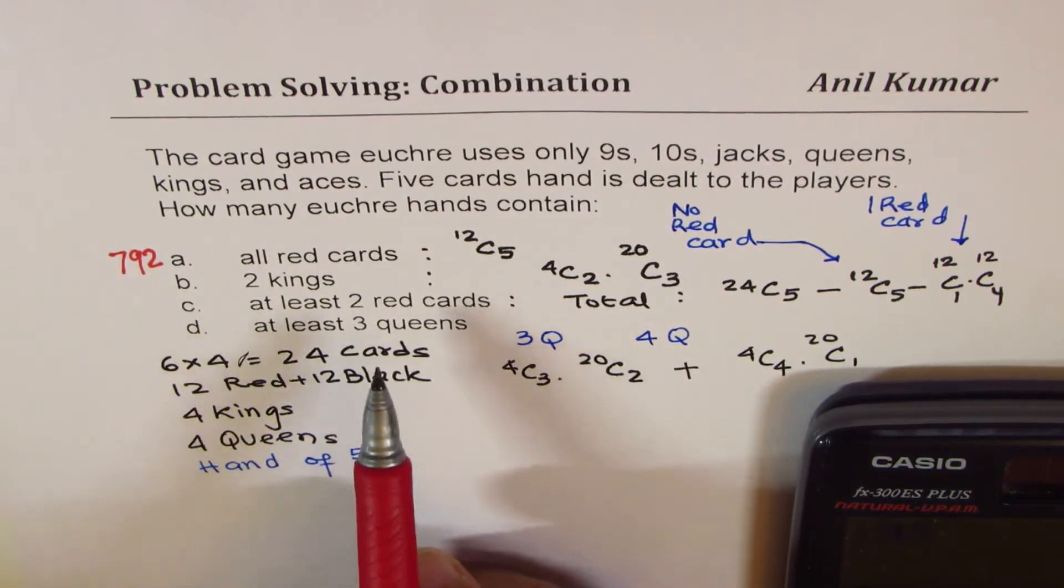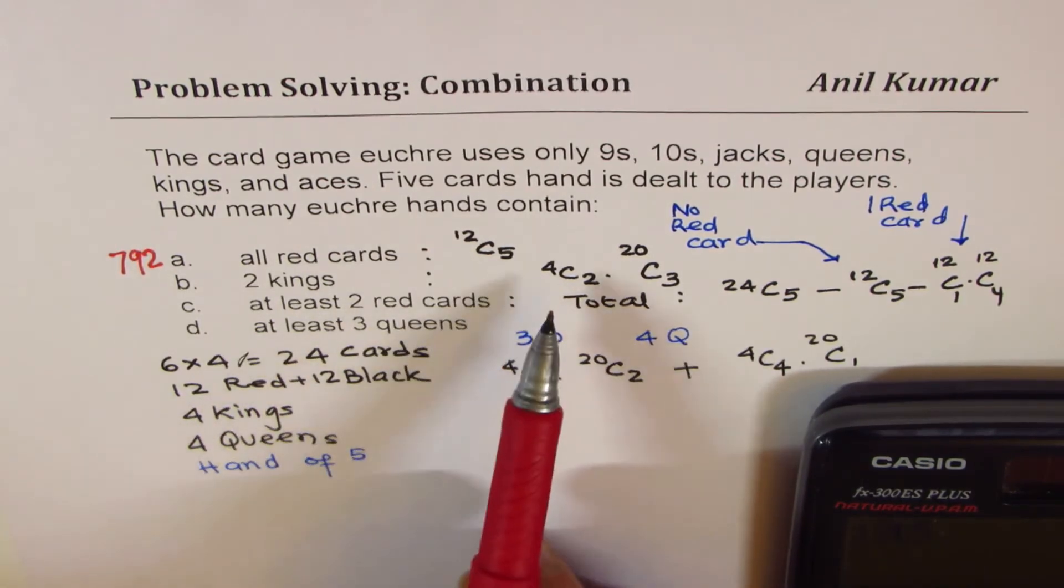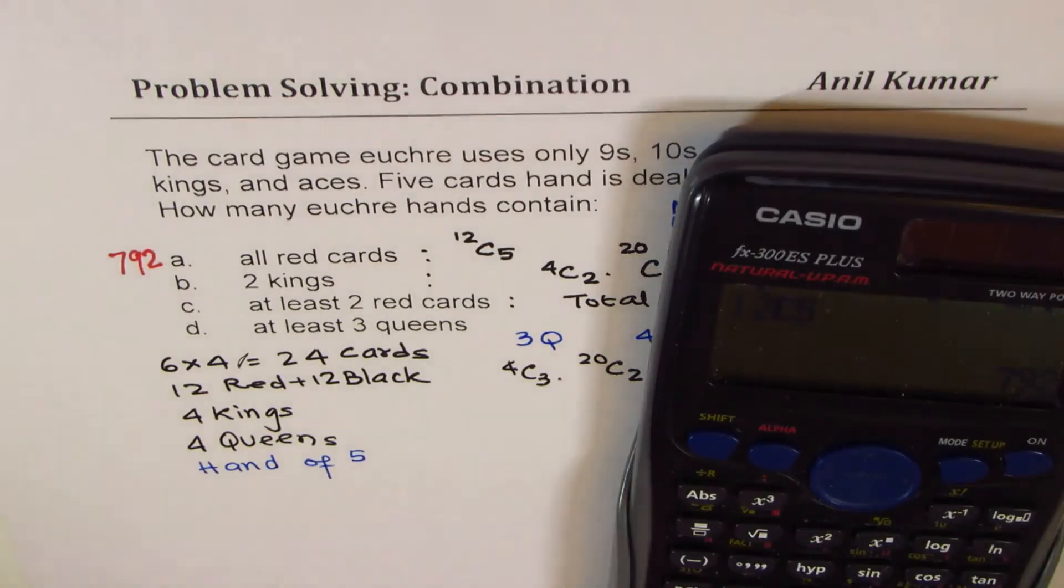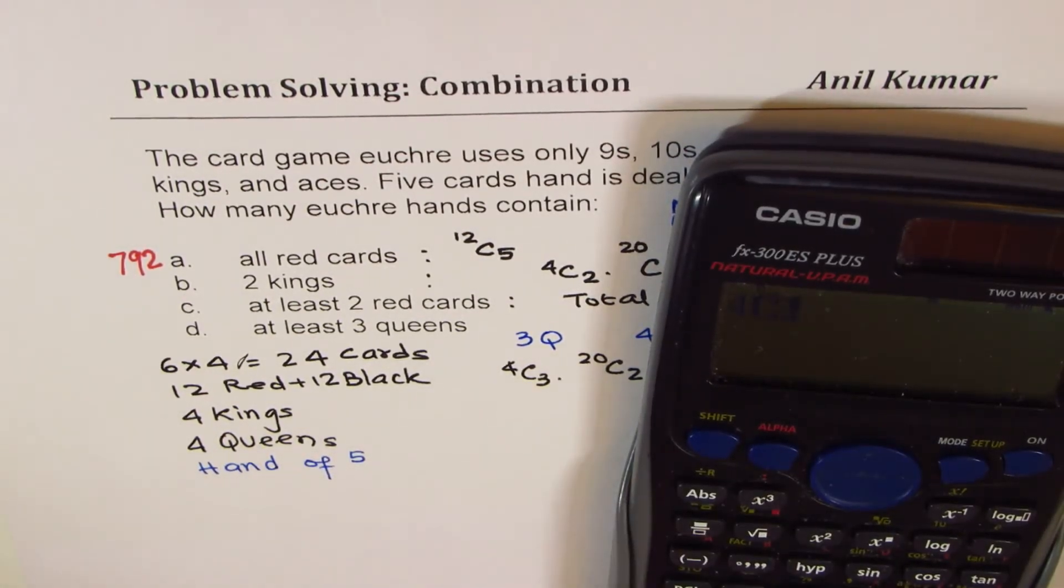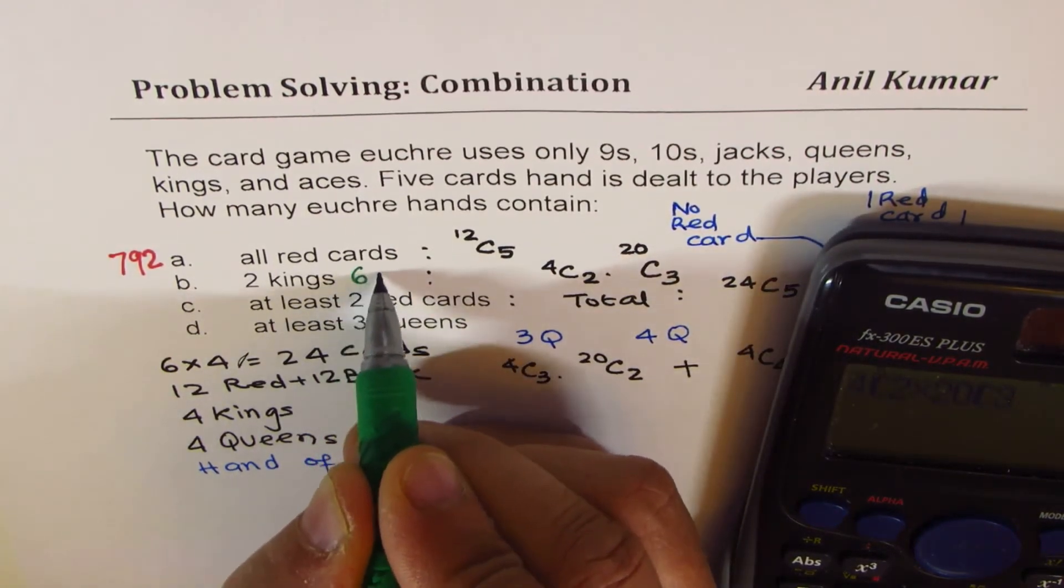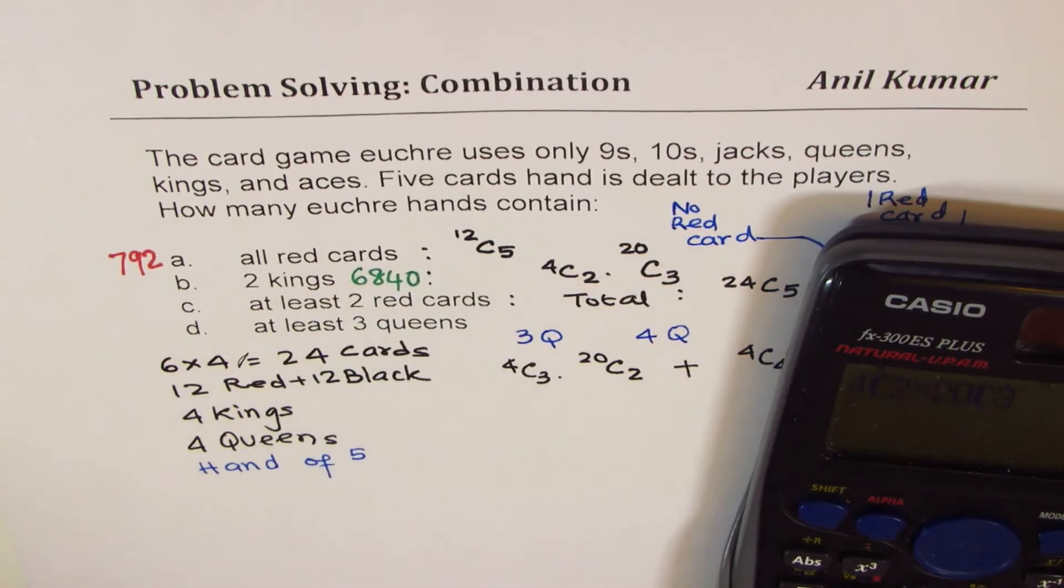Two kings. That means I have to get this combination: 4C2 and 20C3. So let's get 4C2 times 20C3. And that is 6840. So the next one is 6840.